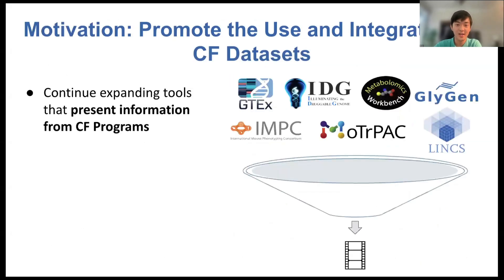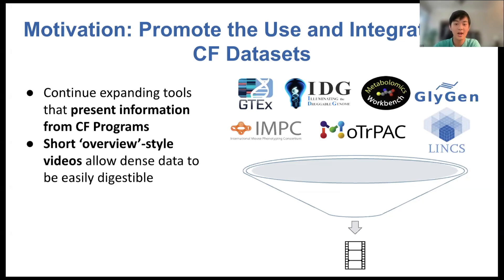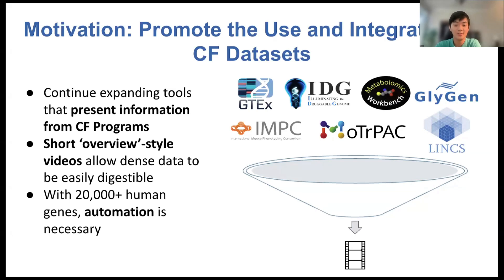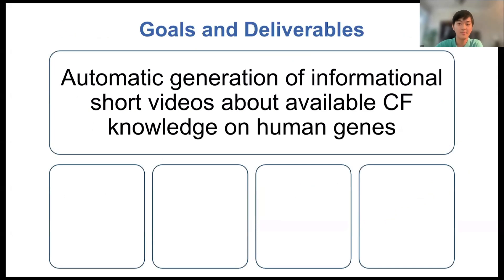The motivation for this project is to promote the use and integration of Common Fund datasets while also expanding the collection of tools that present information from various Common Fund programs. We believe that short overview-style videos allow the dense information spread across this ecosystem to be easily digestible. Since there are more than 20,000 genes in the human genome and the information is spread across various programs, manual creation of these short videos is unrealistic. That's where GeneShorts comes in. The deliverable for this project is to create a pipeline which enables the automatic generation of informational short videos about Common Fund knowledge on particular genes.